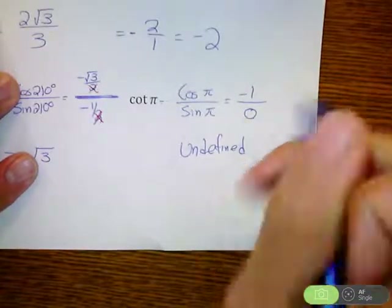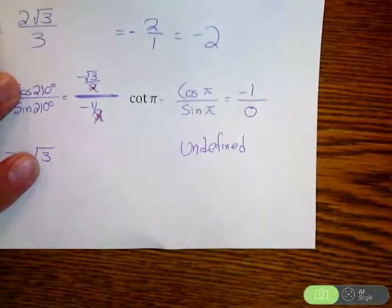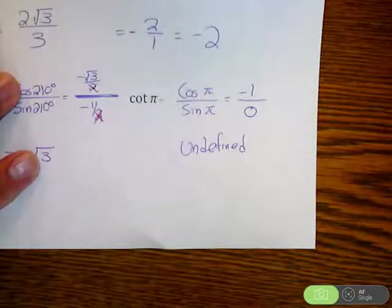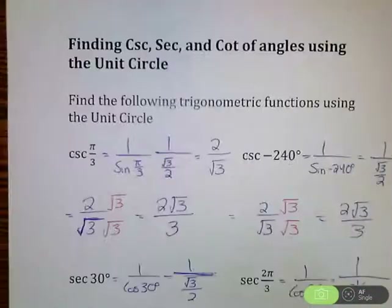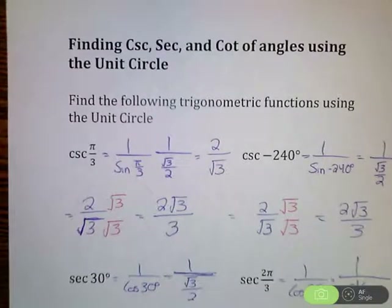And that was finding cosecant, secant, and cotangent of angles using the unit circle.